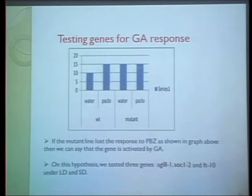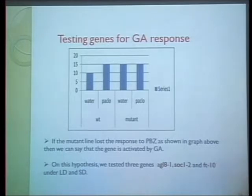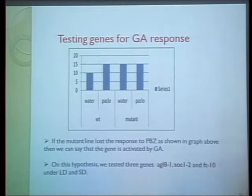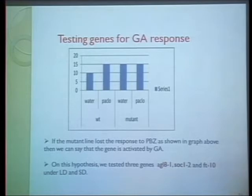Now we come to the main part of the experiment — testing three genes: SOC1, FUL (AGL8), and FT — as potential target genes of GA. Our hypothesis: if a mutant line loses its response to Paclobutrazol while the wild type shows an effect, then the gene that is mutated is a target gene of GA. We tested these three genes under long-day and short-day conditions.